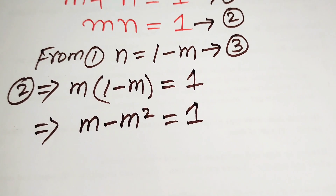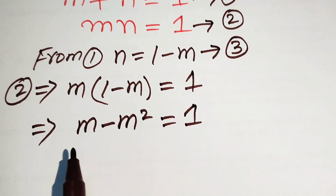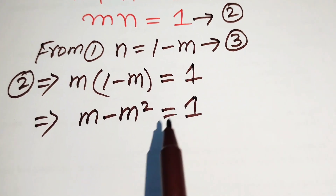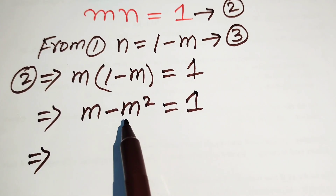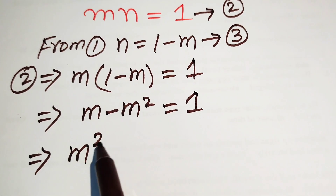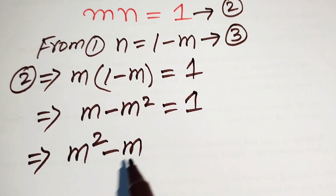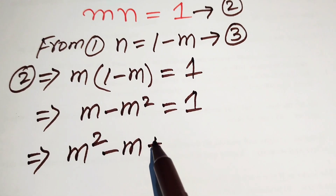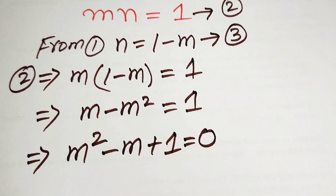Now you can see this equation will become a quadratic equation. We convert it into standard form by moving the terms to the right-hand side. So we get m squared minus m plus 1 equals to 0.